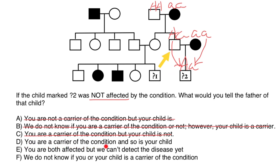Next, variant D: you are a carrier and so is your child. Yes, this is the true statement. Variant E — you are both affected but we cannot detect the disease yet — is also wrong. And variant F — we do not know if you or your child is a carrier — is wrong, because we know for sure they are both carriers. If the child is phenotypically normal according to our problem, the child is an obligate carrier and so is the father. The only correct statement is D. Subscribe and see you in the next video. Goodbye.